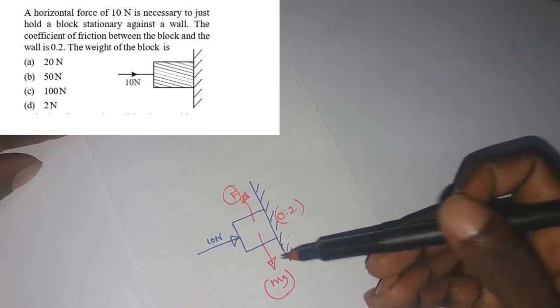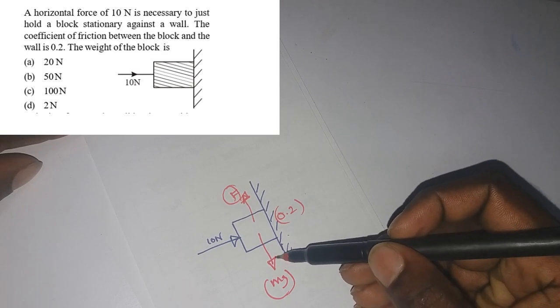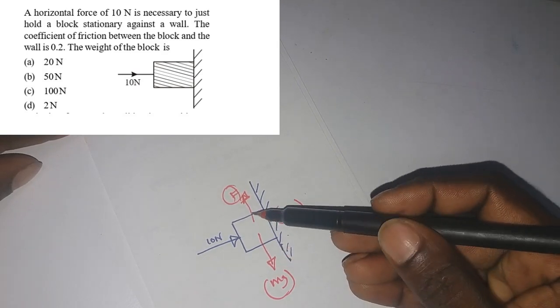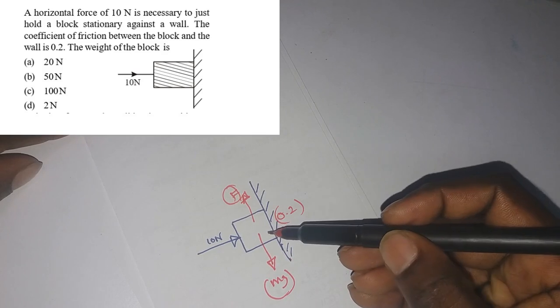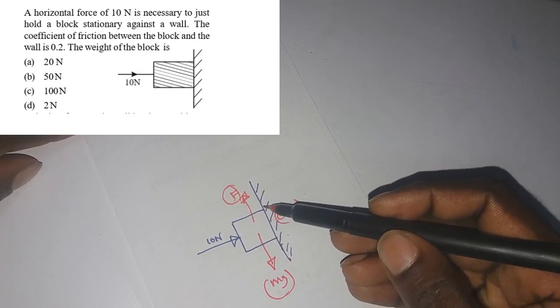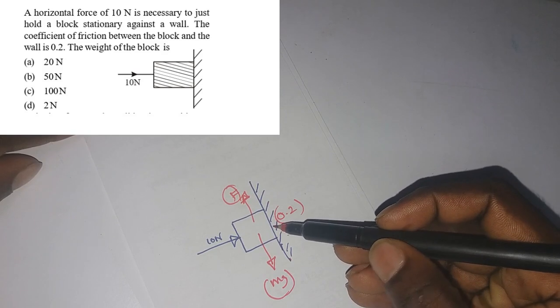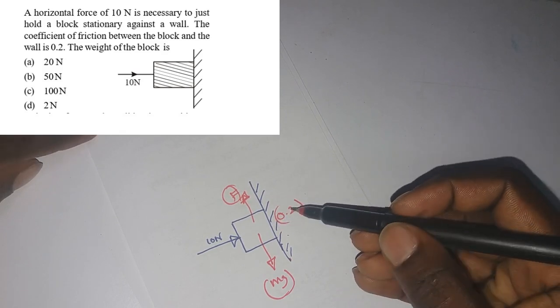So weight acts downwards, so there must be a certain kind of upward force to hold this block. Anyway there's no string or anything, so basically the friction has to do the work, right?